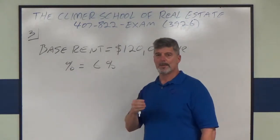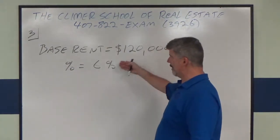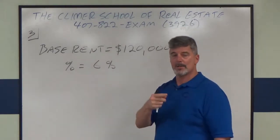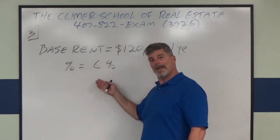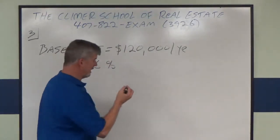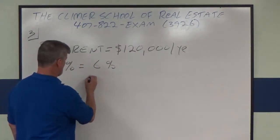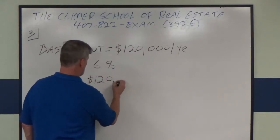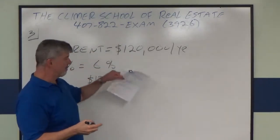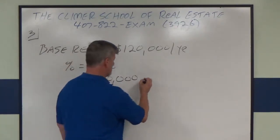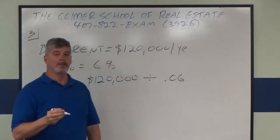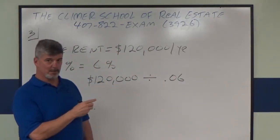Let me show you what happens in the broker version of the percentage lease problem. They give you the base rent and they give you the sales percentage, and they want to know: what's the sales threshold before you have to start paying an extra six percent? Here's what you do — you take the base rent and divide by the percentage to find the sales threshold.